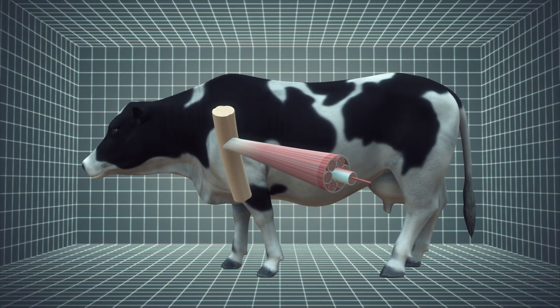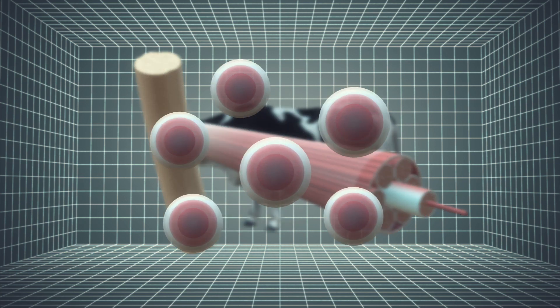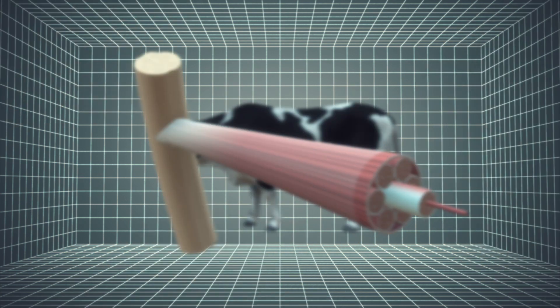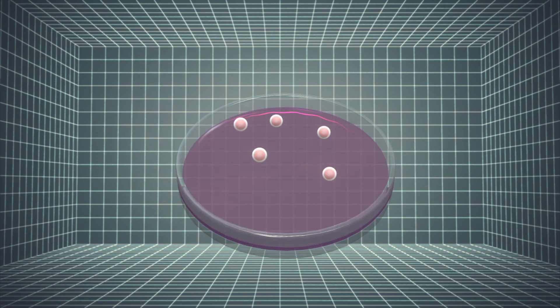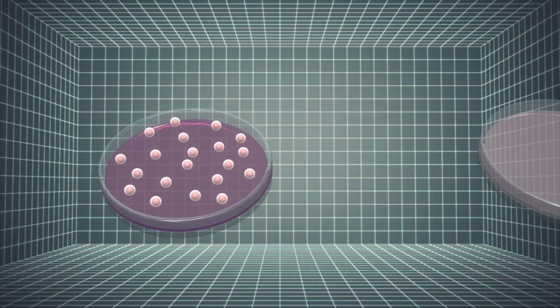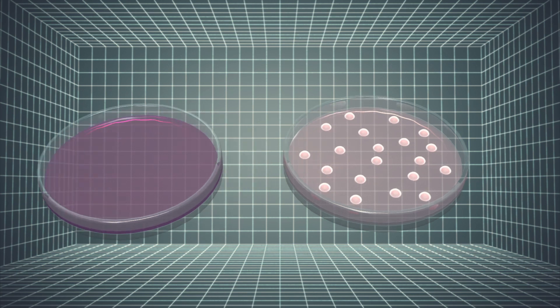Post's team took stem cells from a cow's biopsy and incubated them in a nutrient-rich broth where they multiplied. Then the cells were attached to anchor points in a petri dish where they self-organized into pieces of muscle.